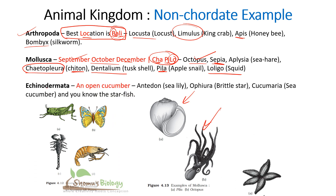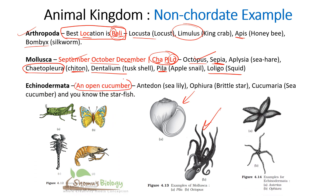For Echinodermata, remember 'An open cucumber': AN gives Antedon (sea lily); OPEN gives Ophiura (brittle star); and cucumber gives Cucumaria (sea cucumber). Echinoderms display pentaradial symmetry with five radial axes. That is how easily you can remember Echinodermata examples.